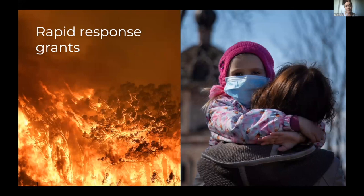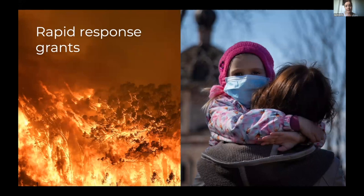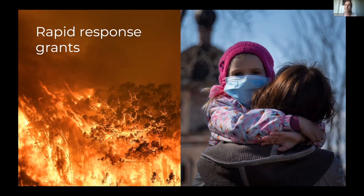Another area where auto-classification can be really useful is for rapid response grants. We saw in 2020 with the bushfires and then with COVID, there was a real push for grant makers to get money out the door quickly. Being able to auto-classify grant applications as they come in — pulling out particular ones based on labelling — can be really powerful in surfacing those applications first so they can go through assessment quicker. In SmartyGrants we had one grant round that opened on a Thursday, had 1,600 applications come in, and then made 1,200 payments by the Friday.